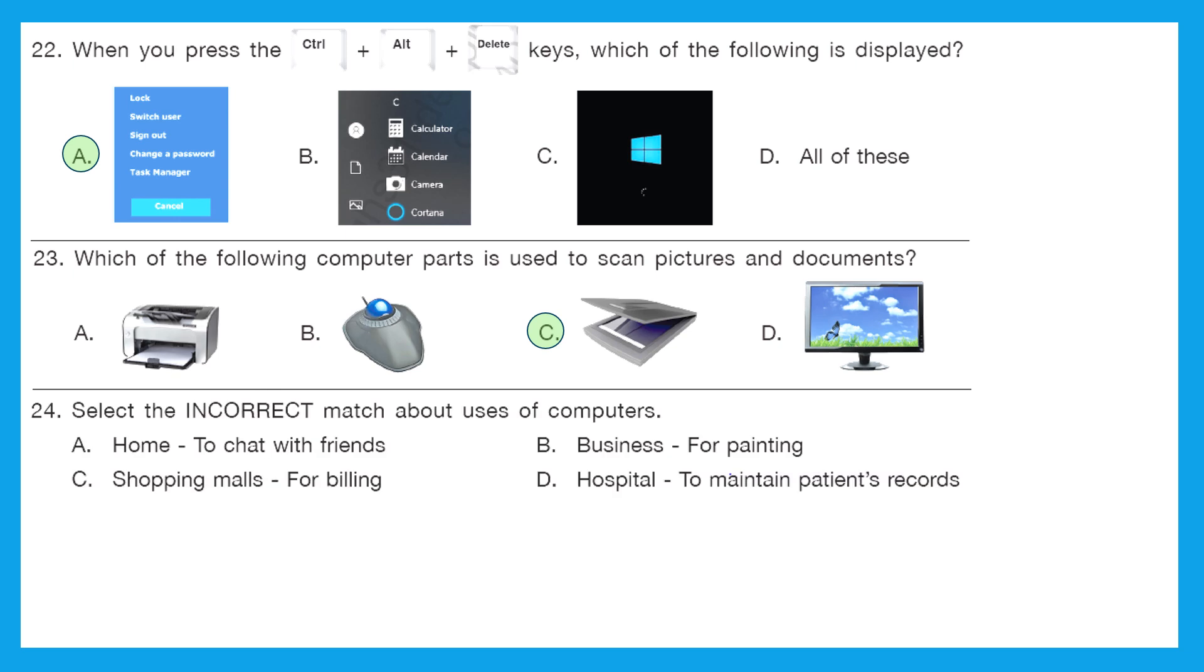Question 24: select the incorrect match about uses of computers. A home to chat with friends. Yes, that can be done. B business for painting. No. C, shopping malls for billing. That's right. D, hospital to maintain patient records. That is also right. So the incorrect match is business for painting.